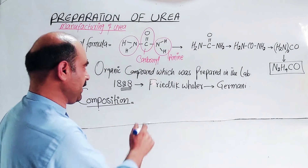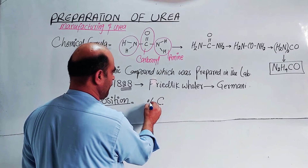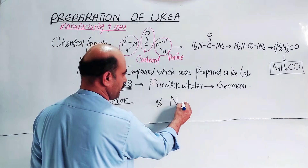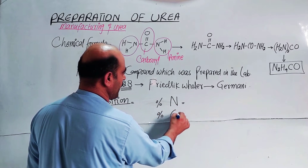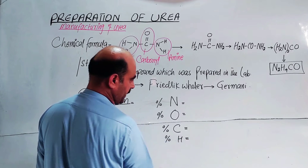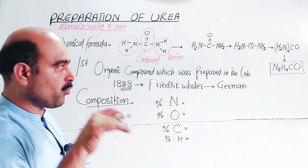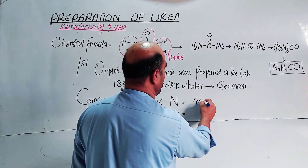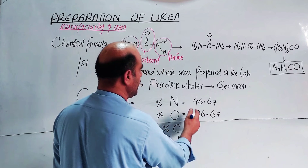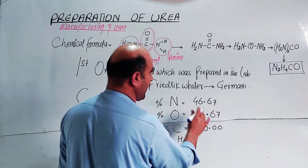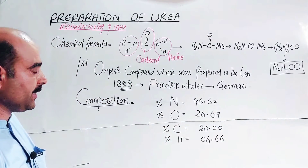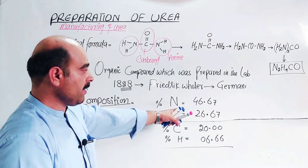The elements present in urea and their percentages: nitrogen has the highest percentage at 46.67%; then oxygen at 26.67%; carbon at 20%; and hydrogen at only 6.66%. Because nitrogen has the highest percentage, urea is an excellent nitrogen fertilizer. The total of these percentages is approximately 100%.